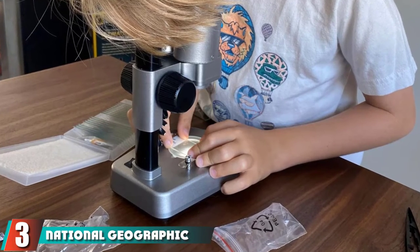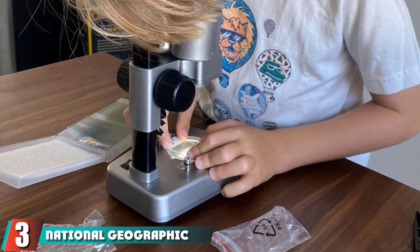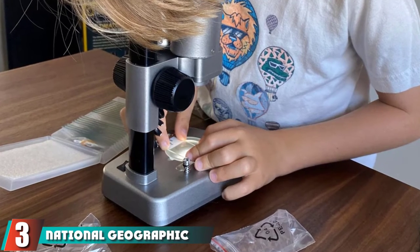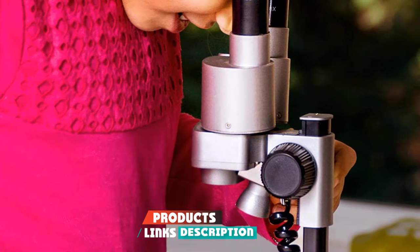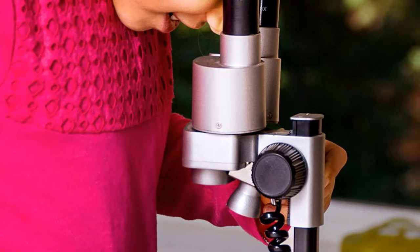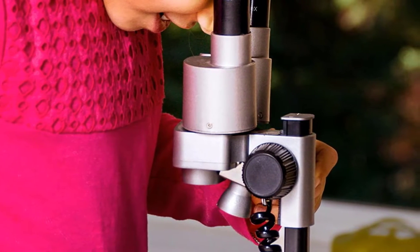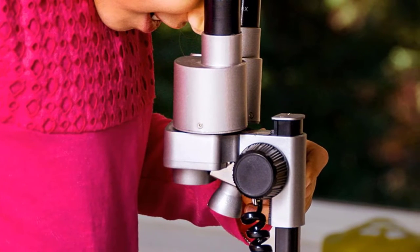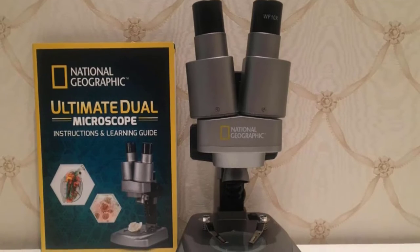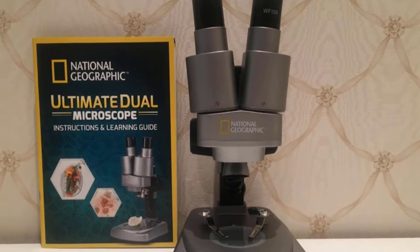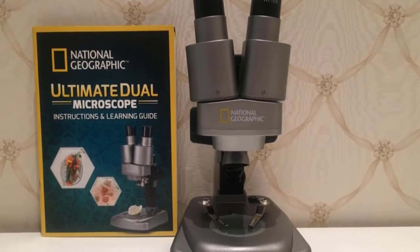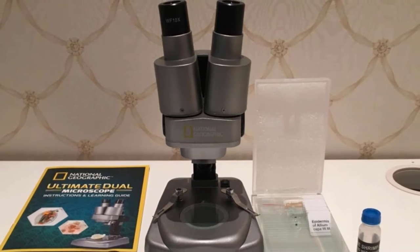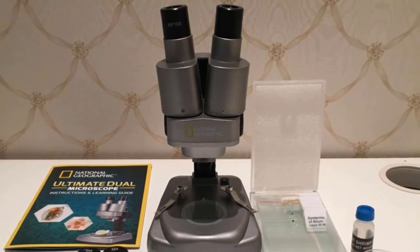The number three position is held by National Geographic Dual LED Microscope. Advanced science students typically use microscopes with two ocular lenses. Nat Geo's offering is the best kids' microscope if you want to mimic that same vibe. This microscope for kids has a design architecture similar to that of a real microscope. What makes it better is the adjustable distance between the eyepiece to avoid eye strain. The eyepiece is interchangeable between 10x and 25x while the objective remains as is at 20x.